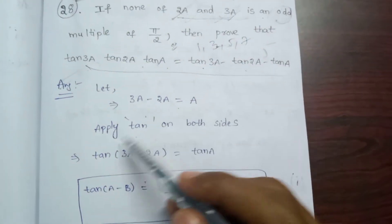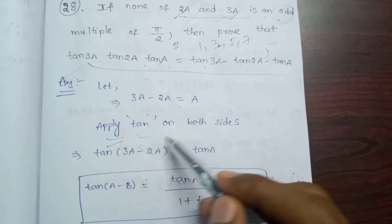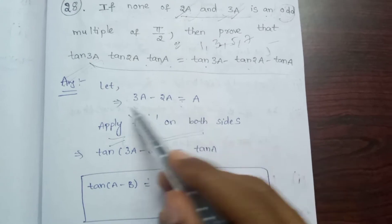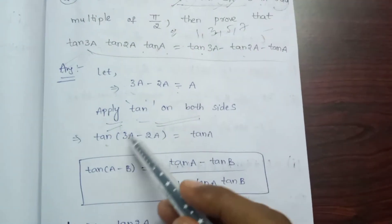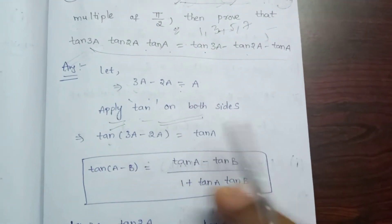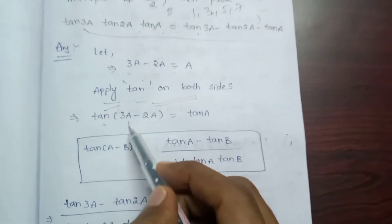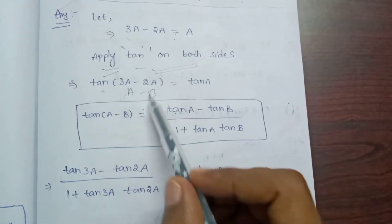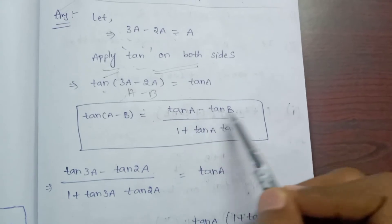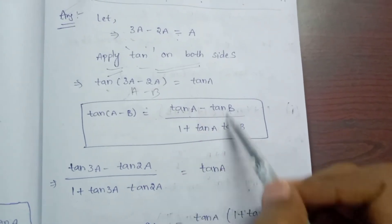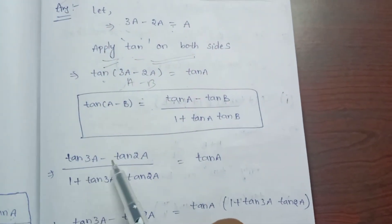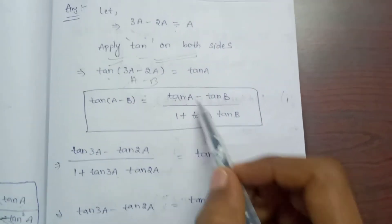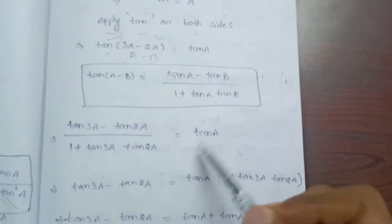So we are applying tan on both sides. Tan of 3a minus 2a is equal to tan a. We apply the tan(A - B) formula: tan(A - B) equals tan A minus tan B divided by 1 plus tan A into tan B. So tan3a minus tan2a divided by 1 plus tan3a into tan2a is equal to tan a.